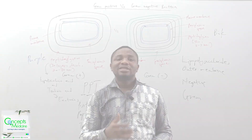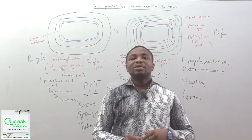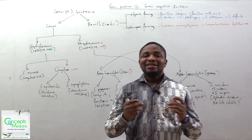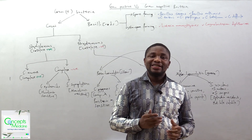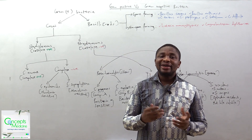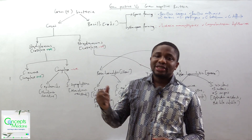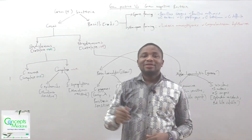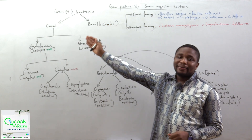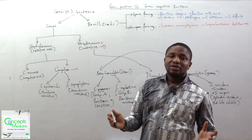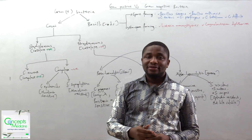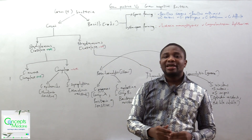Now let's look at the bacteria that belong to the gram-positive and those that belong to the gram-negative. For the gram-positive bacteria, we can divide them into two groups: the cocci — which are round — and the bacilli — which are rod-shaped. The cocci can be divided into staphylococcus, which are catalase positive, and streptococcus, which are catalase negative.